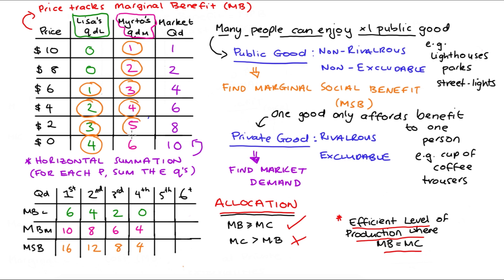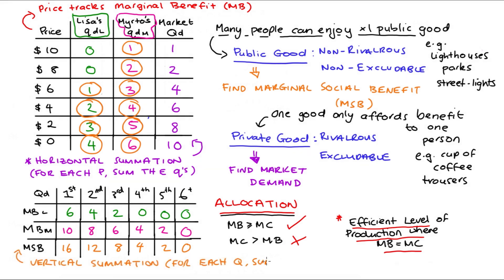For the fifth unit, because Lisa doesn't demand a fifth unit, she gets no marginal benefit — $0 for Lisa. For Murthal it's $2, so in total $2. For the sixth unit, Murthal gets $0 marginal benefit and Lisa, by extension, also gets $0, so the marginal social benefit is $0. What we've done here is what we call vertical summation — for every quantity, we sum the marginal benefit to create our marginal social benefit.